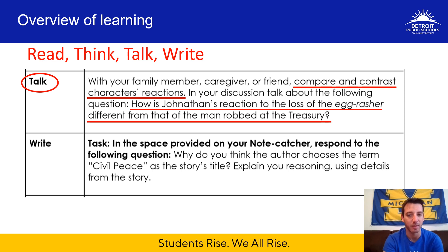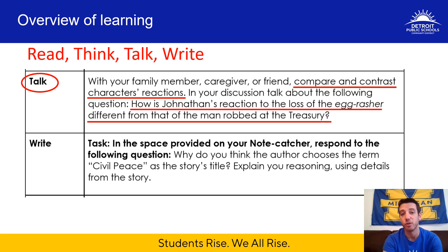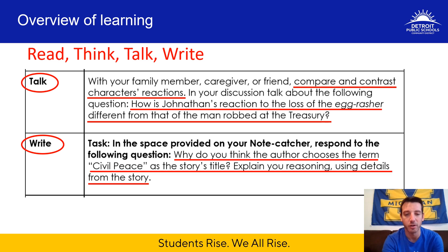Remember, the egg rasher is the money that people received for turning in the old rebel money. So you have to compare and contrast Jonathan's reaction to the loss of his egg rasher to the man's loss at the treasury when that man was robbed of his egg rasher. Then you're going to write in your note catcher a response to the following question: why do you think the author chooses the term civil peace as the story's title? Explain your reasoning using details from the story. Think about both those words and what they mean and what they may mean together.